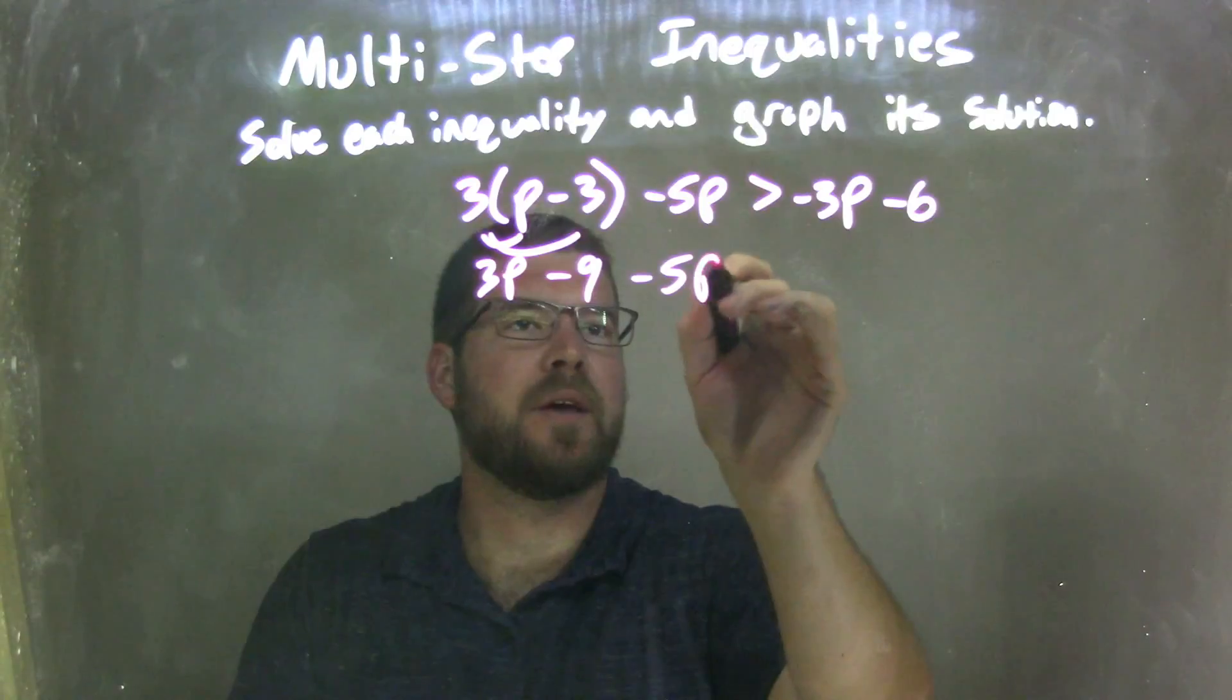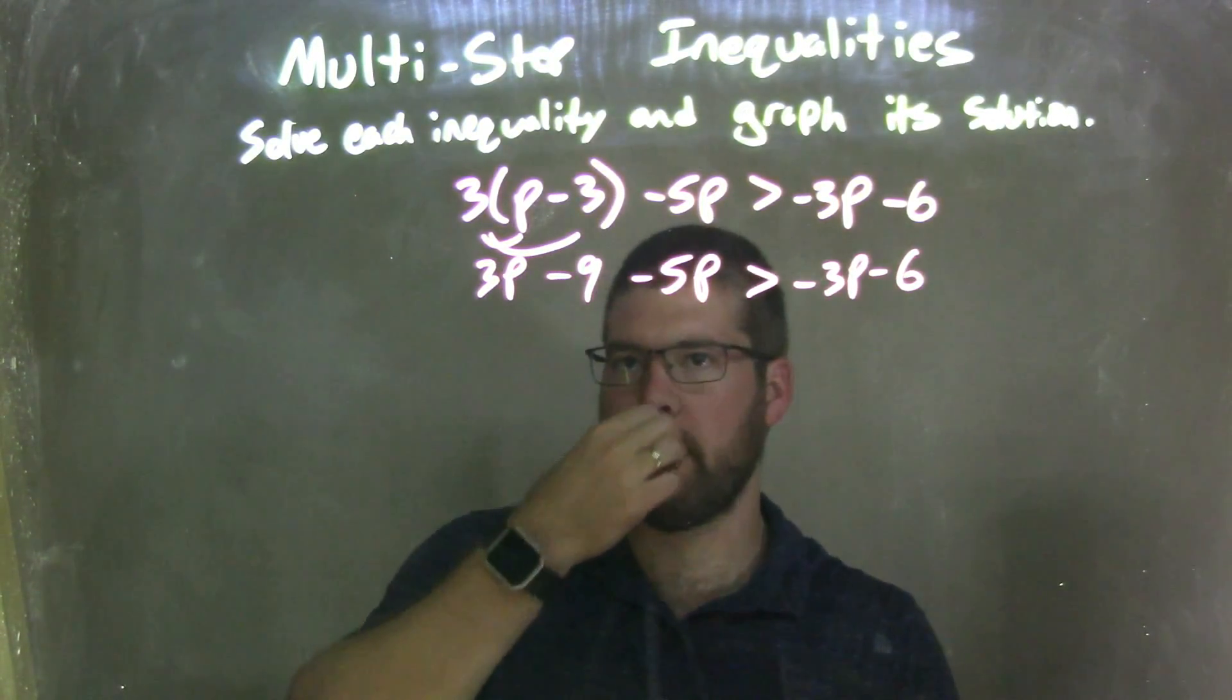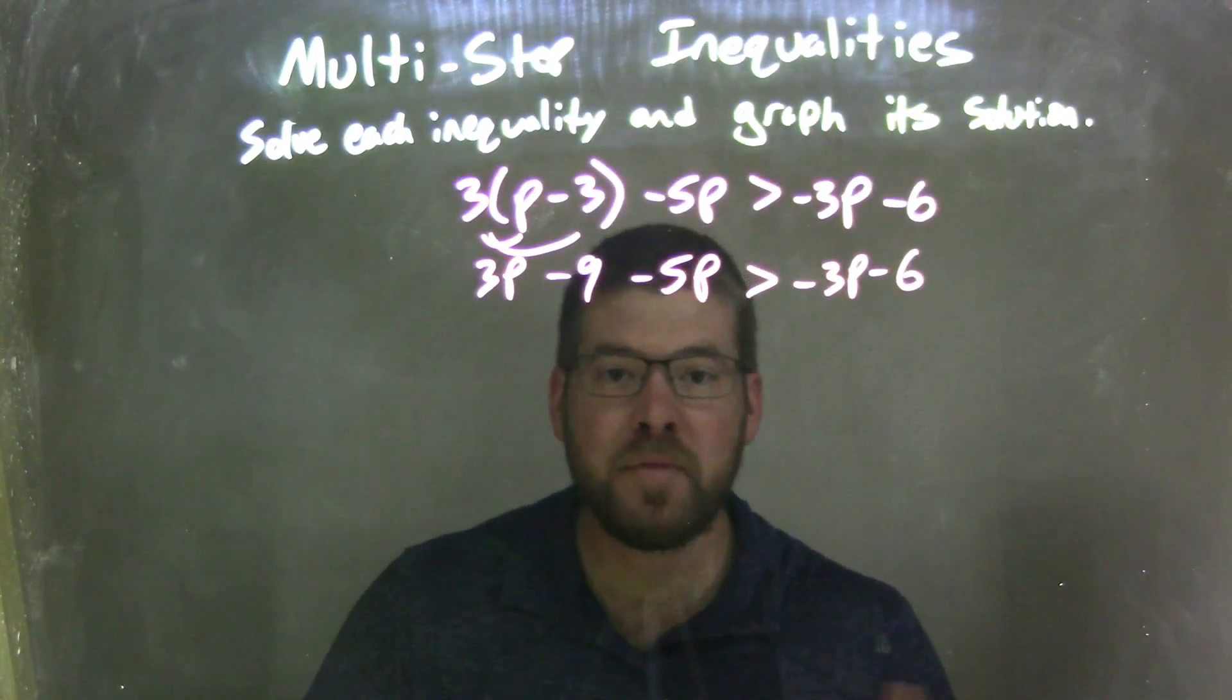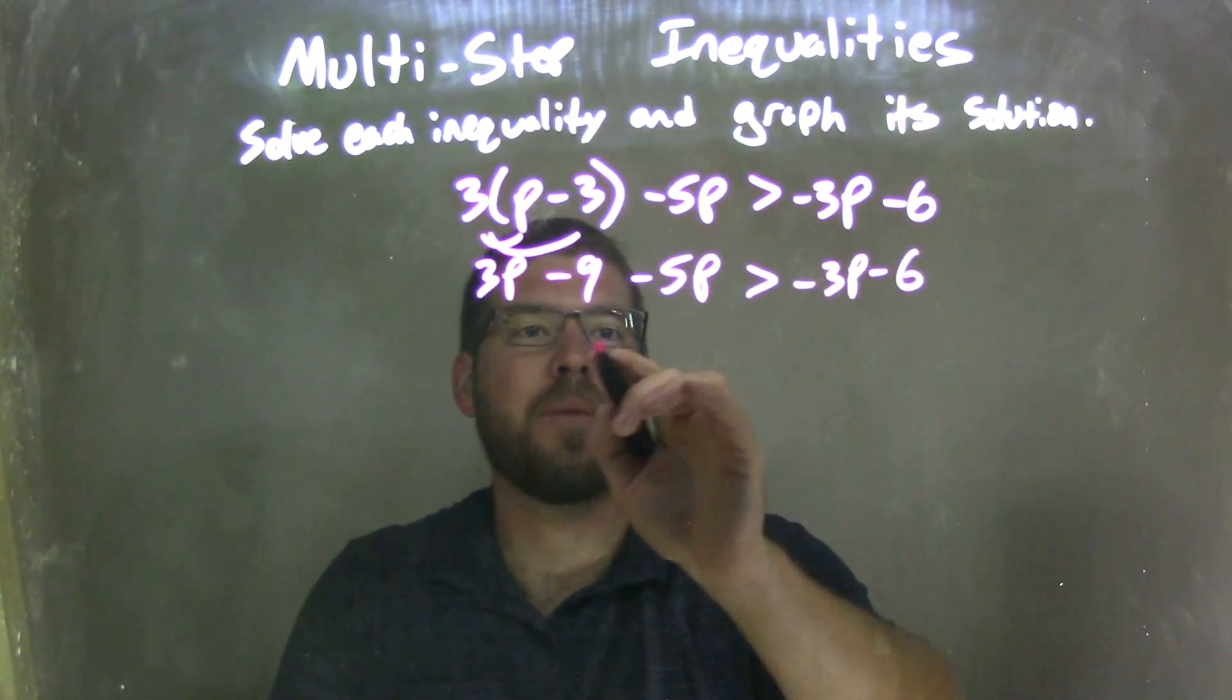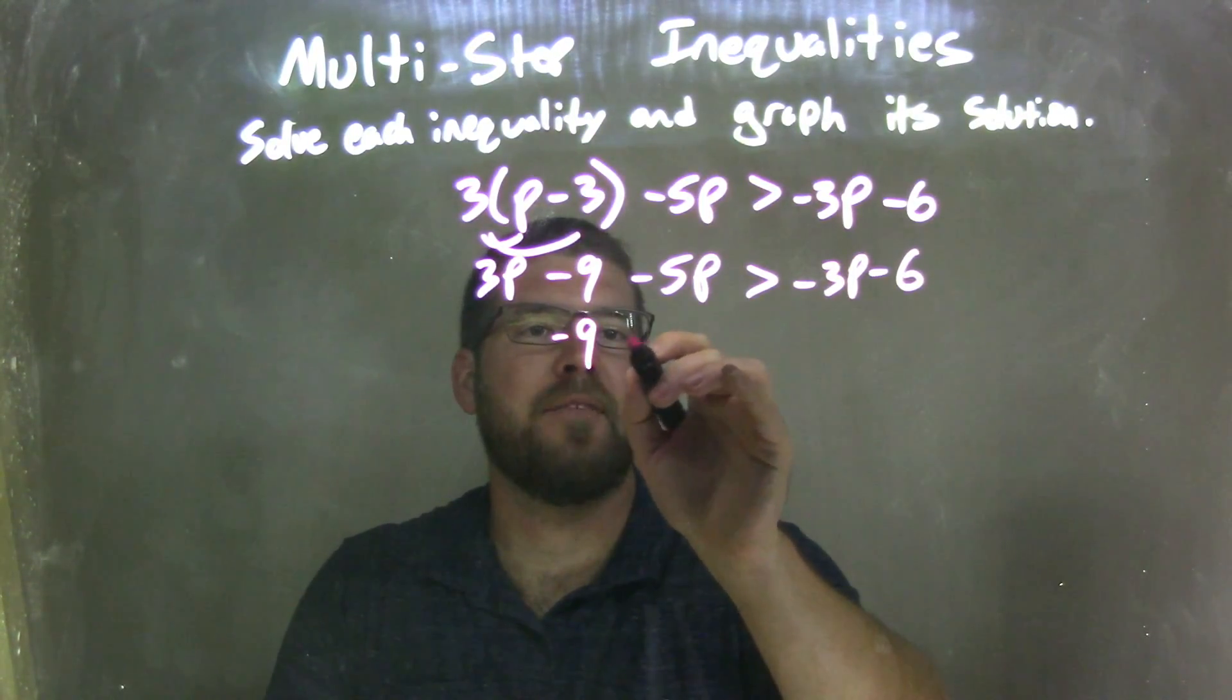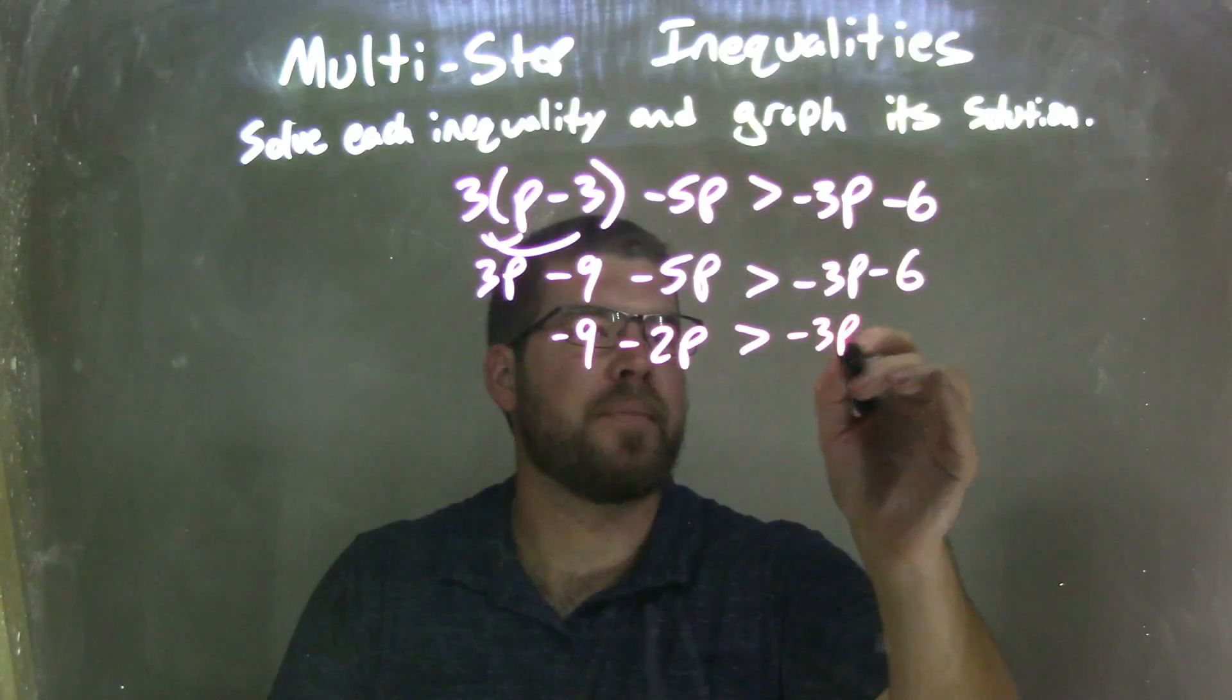Then we have minus 5p here is greater than negative 3p minus 6. Let's combine our like terms now on each side. 3p and minus 5p together come to be negative 2p, so we have negative 9 minus 2p is greater than negative 3p minus 6.